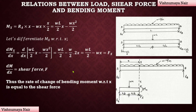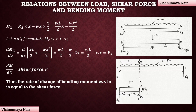In the previous videos on shear force and bending moment diagrams, we saw that the maximum bending moment occurs at a point where the shear force is zero, after changing its sign from positive to negative or vice versa. From this equation, dM/dx equals the shear force, so bending moment will be maximum when dM/dx equals zero — that is, when the shear force equals zero. This is the reason we obtain the maximum bending moment at a point of zero shear force.